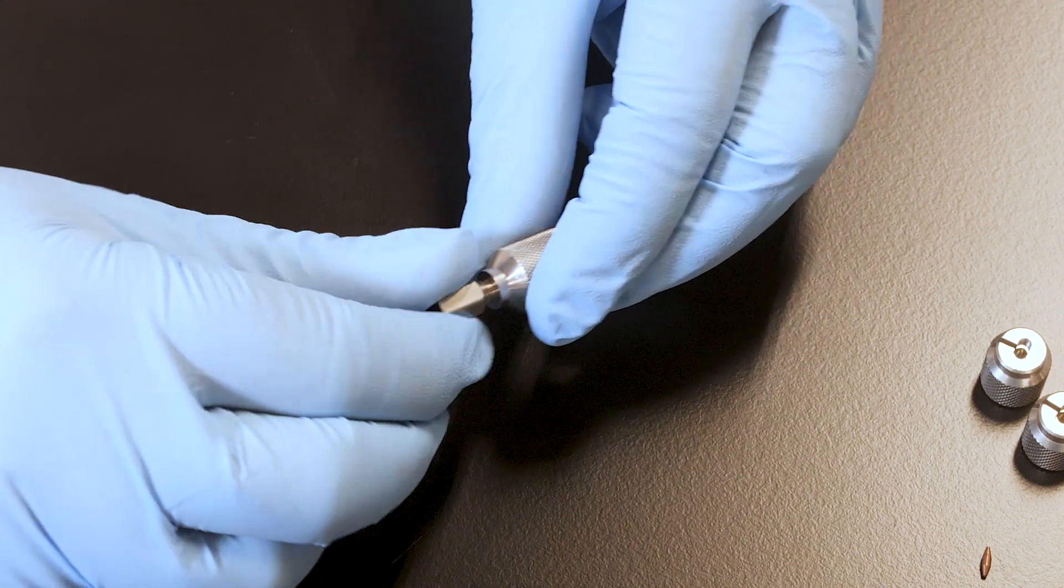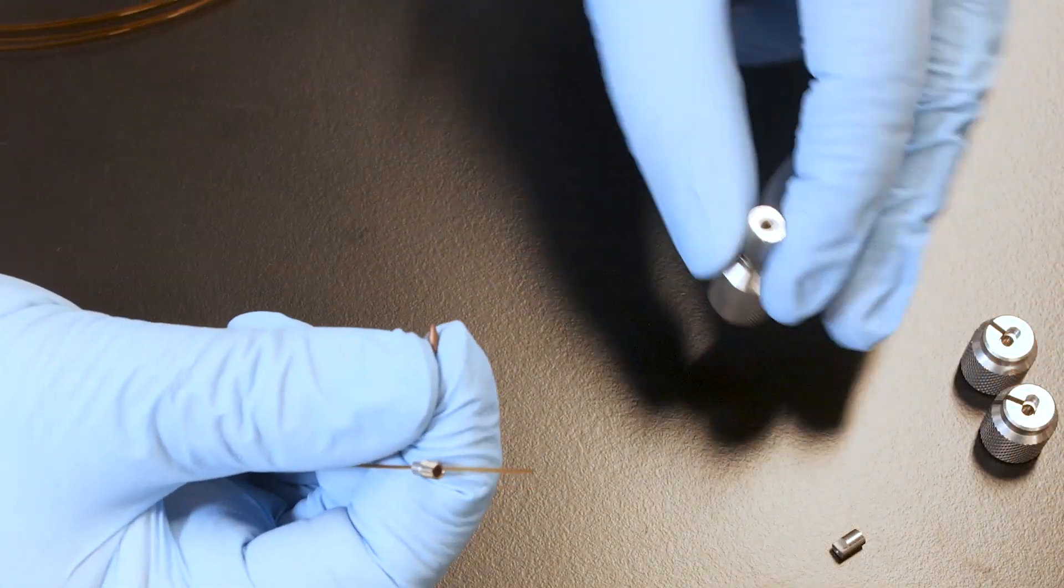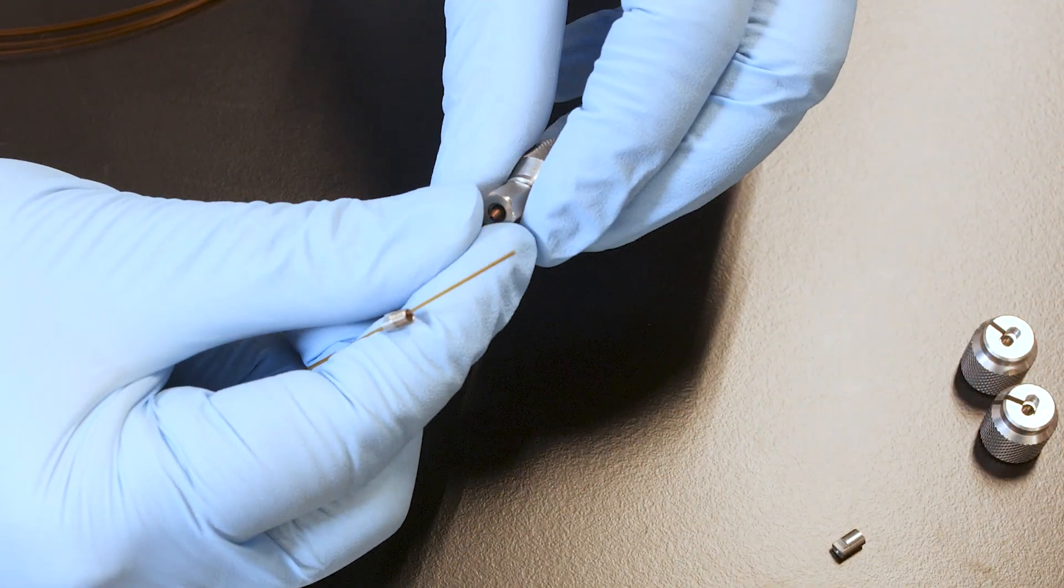The first step is to prepare the tools by screwing the connection nut onto the nut adapter tool and position the double taper ferrule into the connection nut.